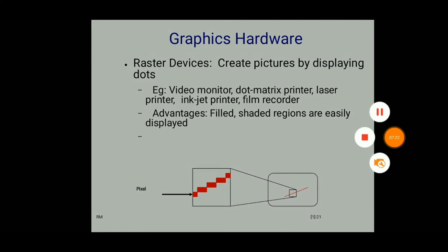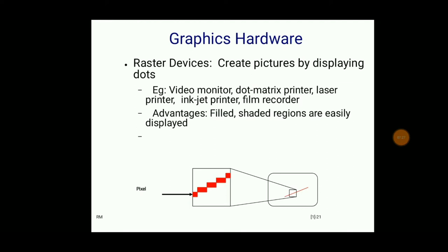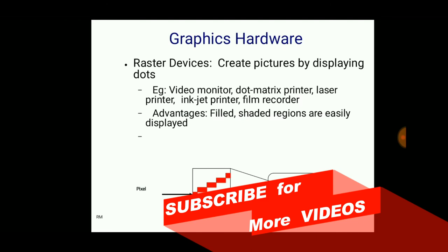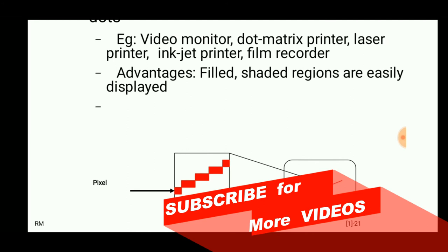Output devices such as a video monitor, dot matrix printer, laser printer, inkjet printer, and film recorder are used for creating pictures by displaying dots. These are used to fill images inside boundaries, and each pixel is arranged in a predefined format so that we can get the accurate shape of the image.